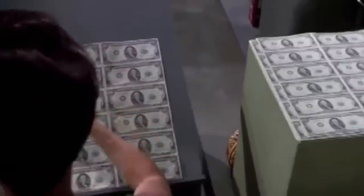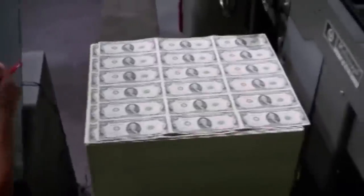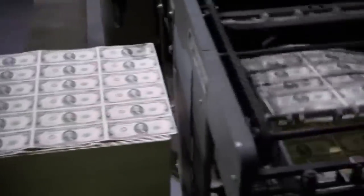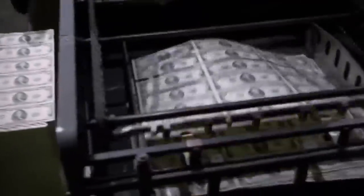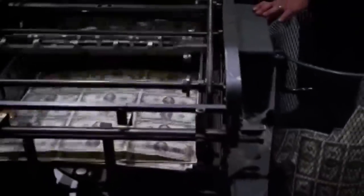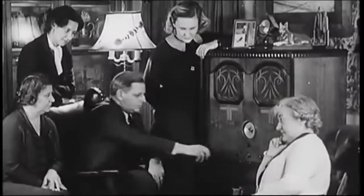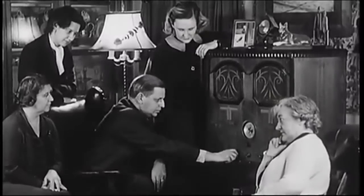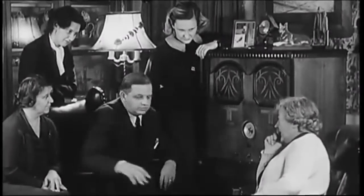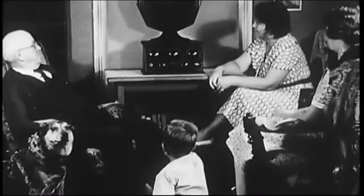It's estimated that there were about four times as many US dollars in circulation than there were gold reserves to back them up. So in 1971, President Nixon cut the tie between the US dollar and gold, essentially ending the convertibility promise and ending the Bretton Woods system that had been in place since 1944.